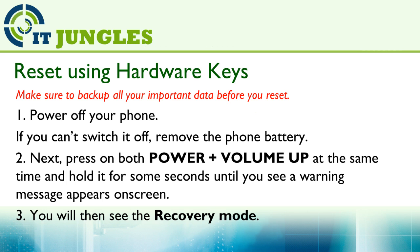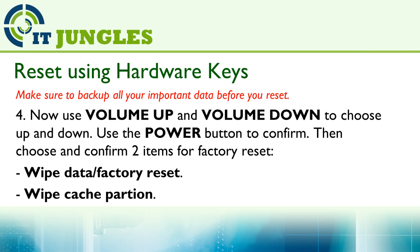You can also reset your phone using the hardware keys combination. First, you need to power off the phone. If you can't turn it off, you can remove the battery out of the phone. Then press both the power plus the volume up button at the same time and hold it for some seconds until you see a warning message appears on the screen. You will then see the recovery mode. Next, you can use the volume up or volume down key to go up and down the option list. You can also use the power button to make the selection.